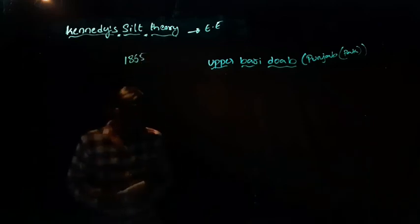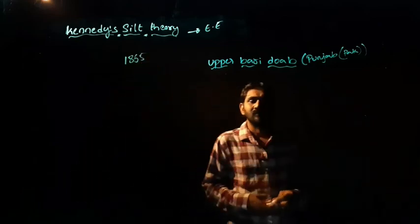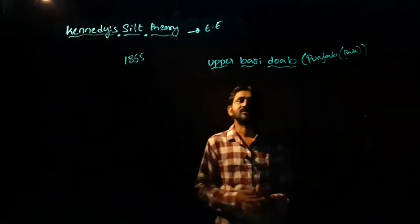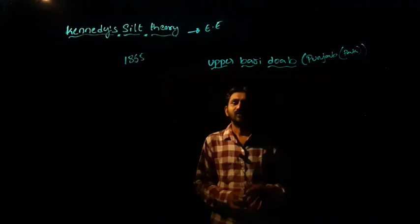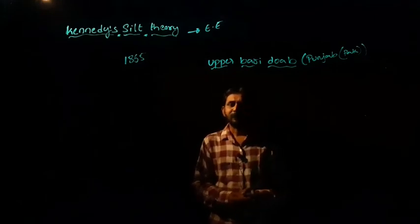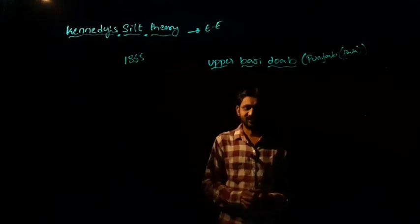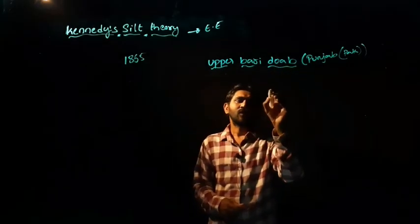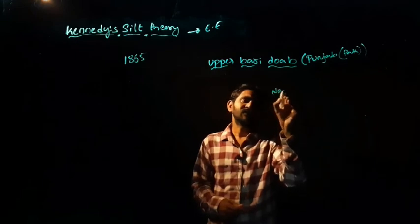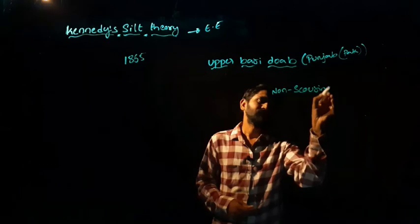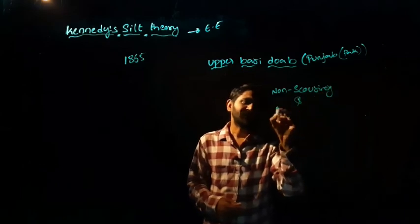In 1865, he proposed his silt theory. He have gone through this Upper Bari Doab canals. According to him, he has seen this site and this site is not desilting. It is non-scoring and non-silting channel.